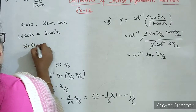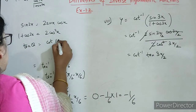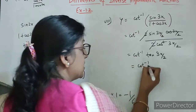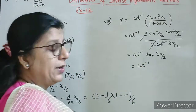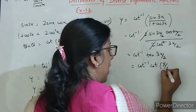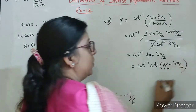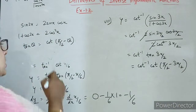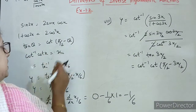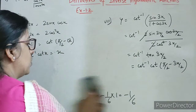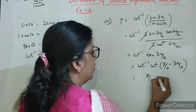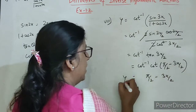Ab yeh tan ko cot mein change karna padega. Toh kaise? Pi by 2 minus theta. So this we can write: tan 3x by 2 hai na, isko hum kya likhenge — cot of pi by 2 minus 3x by 2. Now next property: cot inverse cot x is x. So use here this property. So yeh ho jayega pi by 2 minus 3x by 2.